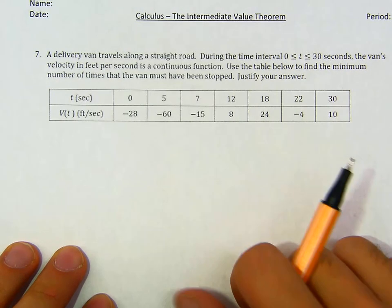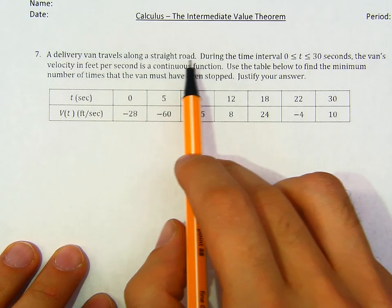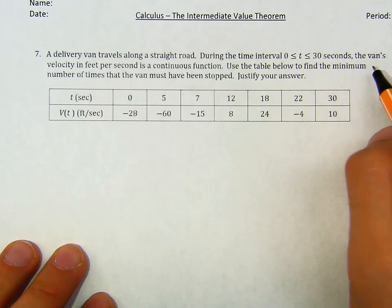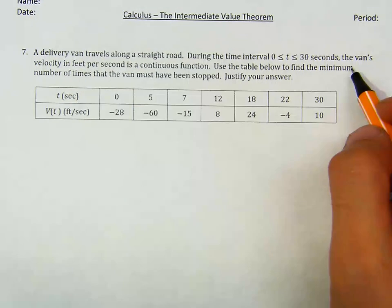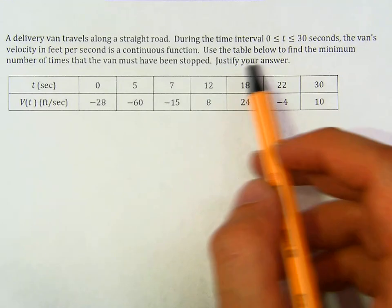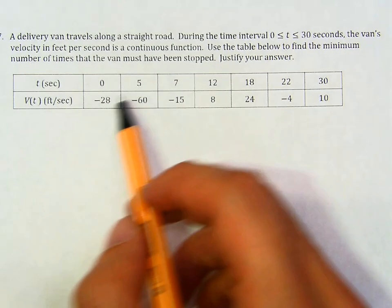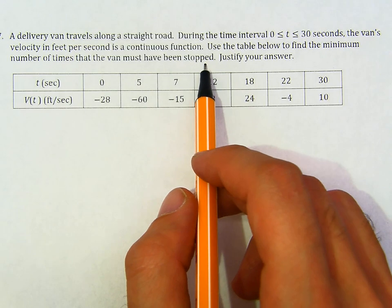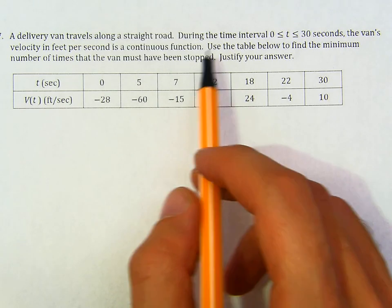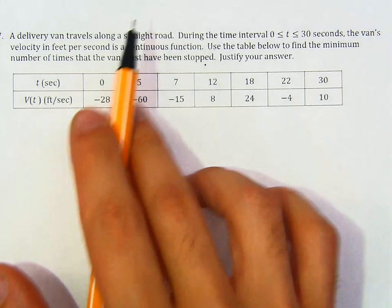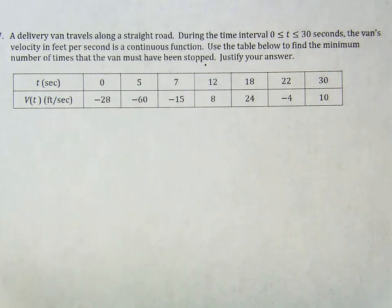Number 7. A delivery van travels along a straight road during the time interval from 0 to 30 seconds, and the van's velocity in feet per second is a continuous function. Use the table below to find the minimum number of times that the van must have stopped. Justify your answer. Give me a second to think of a good solution.